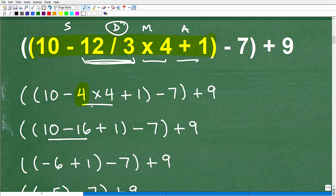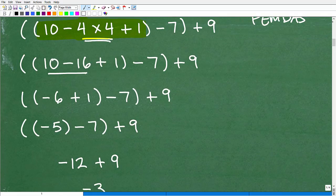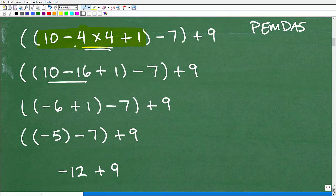OK, so now at this point, again, I've still got work to do in my first set of parentheses. So here I have subtraction, addition, multiplication. It's pretty clear I've got to do the multiplication now, right? So with PEMDAS here, I've got to deal with that multiplication here. So 10 minus 4 times 4, of course, is 16. OK, so we'll write our answer there, plus 1.